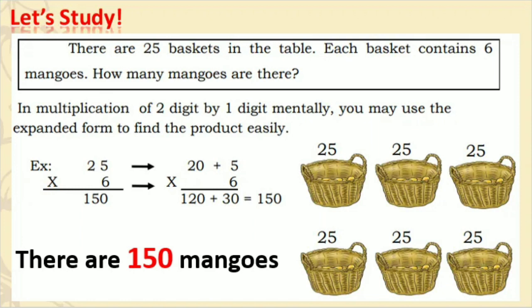Let's analyze this example. There are 25 baskets in the table. Each basket contains six mangoes. How many mangoes are there? In multiplying numbers mentally, you may use the expanded form to find the product easily. You can expand 25 into 20 plus 5 and then multiply it by 6. 6 times 5 is 30, and 6 times 20 is 120. 120 plus 30 is 150. So there are 150 mangoes in all.